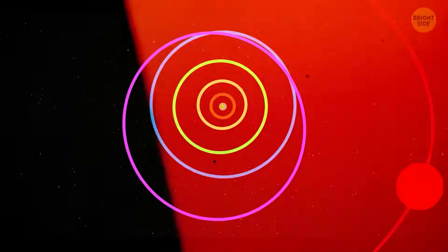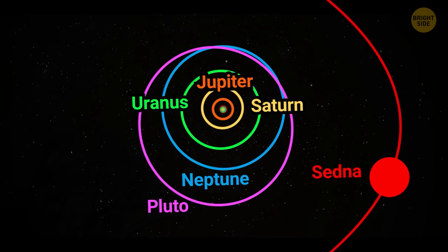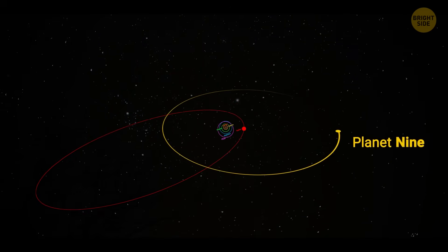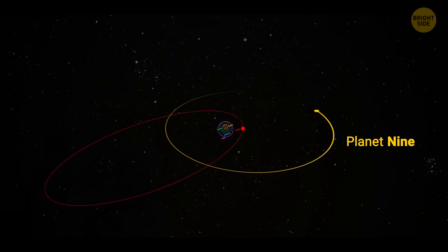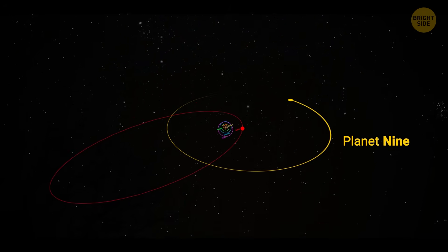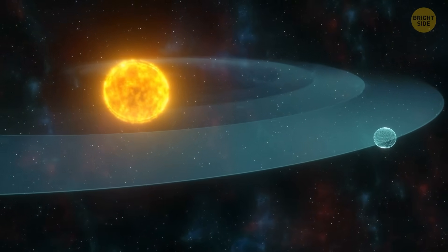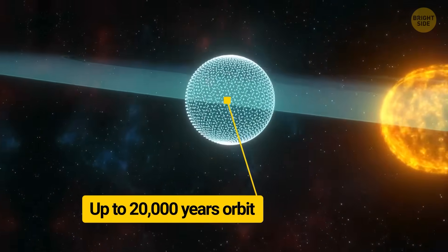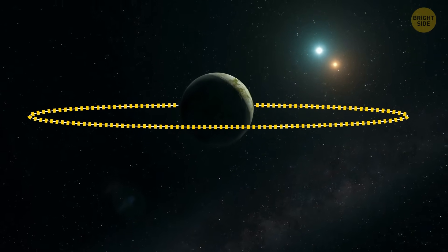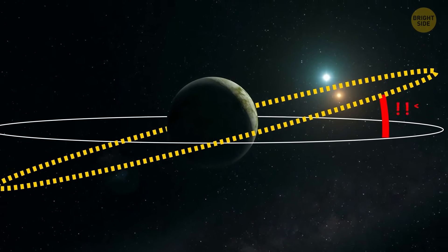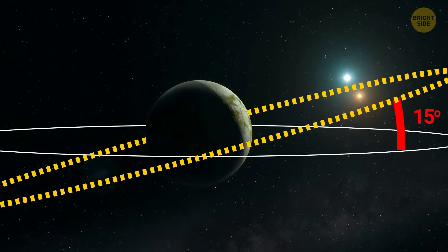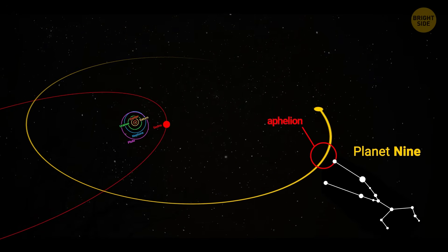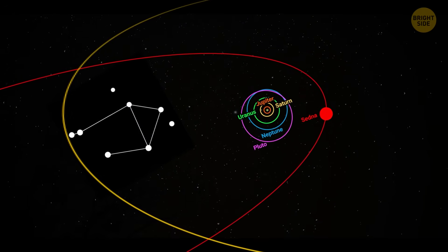At that time, those who supported the Planet 9 theory believed that if it existed, it would move around the Sun in a huge, stretched-out circle called an elliptical orbit. It would be about 400 to 800 times farther from the Sun than Earth is, about 13 to 26 times farther than Neptune. If it really had that kind of orbit, it would take around 10,000 to 20,000 years to go around the Sun just once. Plus, if it indeed orbited the Sun, it wouldn't follow the same flat path as the other planets. Its path would be tilted by about 15 to 25 degrees. The farthest point in its orbit, called aphelion, would be in the direction of the Taurus constellation. As for the closest point, it would point towards Serpens, Ophiuchus, or Libra.